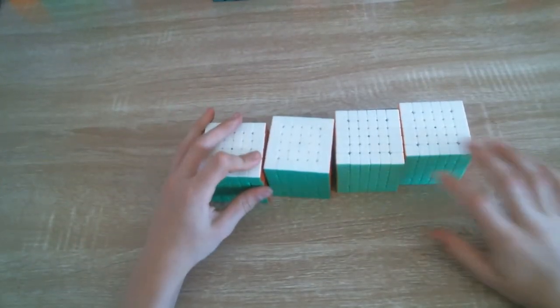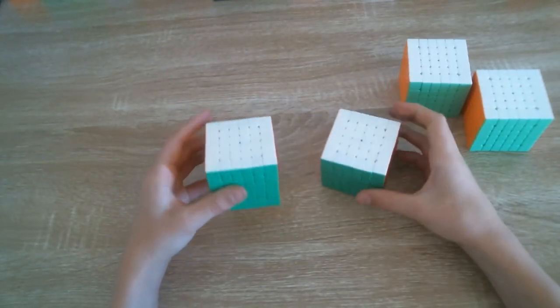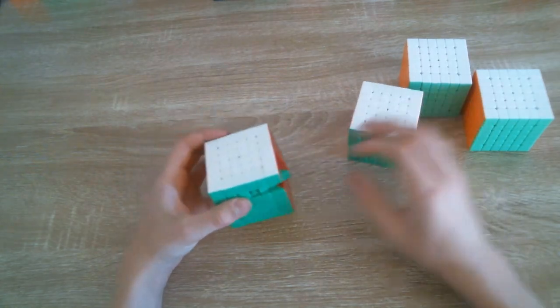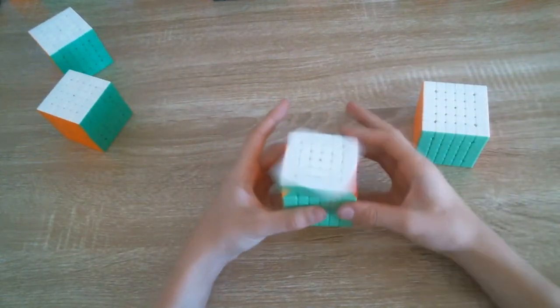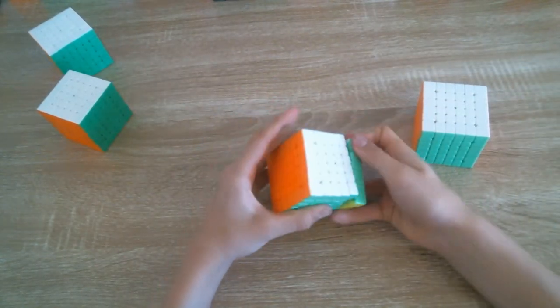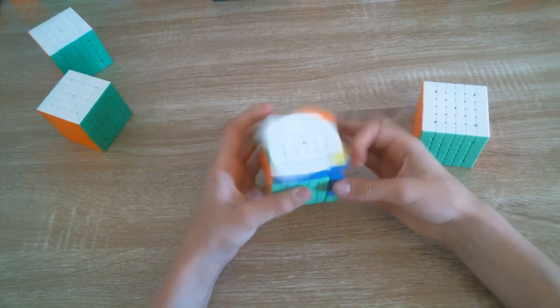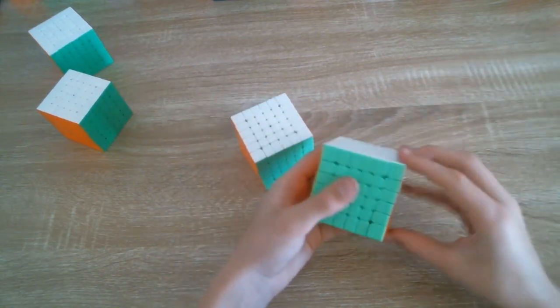6x6s. I have two Little Magics, one of them is non-magnetic, one of them is magnetic, and the non-magnetic is missing a center. And two MGCs. This one I lost an internal piece for and it was my first one. And this one is my newer one which is a lot better. This one is my main and this one is my backup.